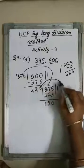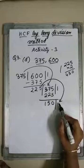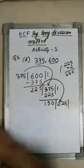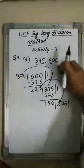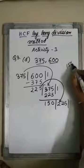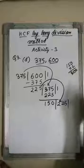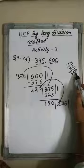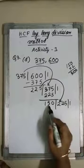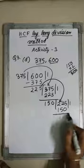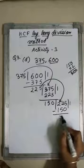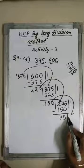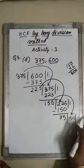Bring this divisor 225 down as the new dividend. Again find how many times you can divide 225 by 150. 150 into 2 is 300, and 225 is less than 300, so you write 1.